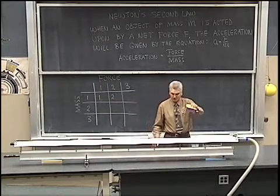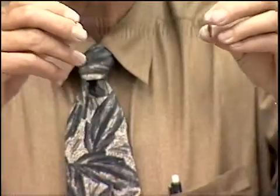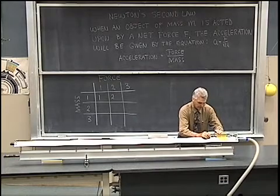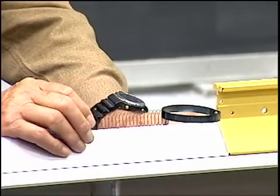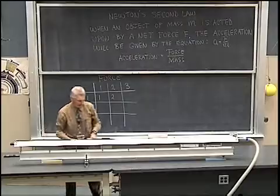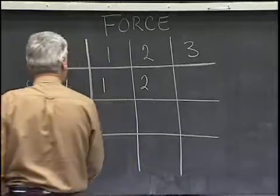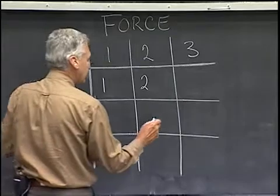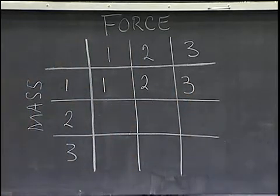Similarly, if I have the same one unit of mass and this time apply a force of three units — three times as much stretch in the spring, three units of force on that original one unit of mass — we have to move fast to keep up with that. We find that with three units of force on one unit of mass, we get an acceleration of three units.